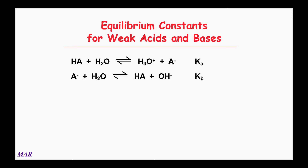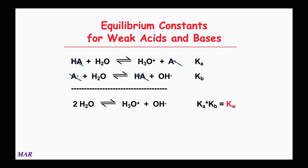If you combine those two expressions, the A⁻ will cancel and the HA's will cancel. You're left with two waters making hydronium plus hydroxide — that's Kw! Kw equals hydronium times hydroxide, and we get that same expression by multiplying Ka times Kb. Remember: if you add equations together, you multiply the K's to get the overall K. So Ka × Kb = Kw — a really cool relationship.